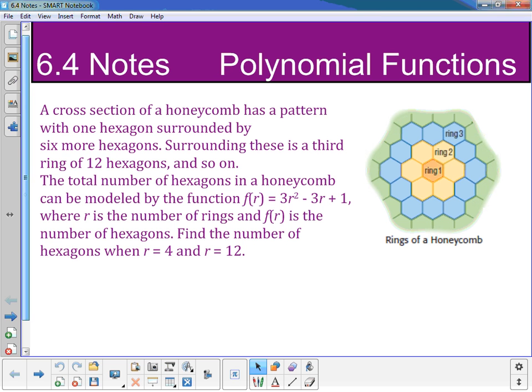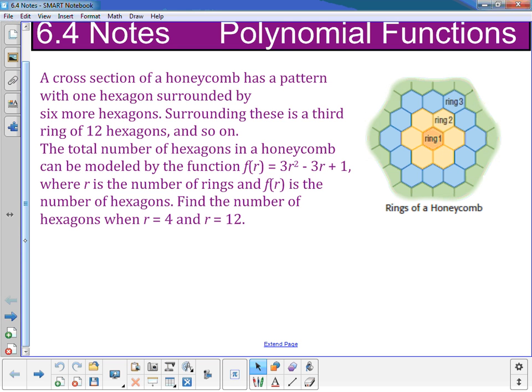So we know the function of the pattern. We're looking at this pattern here. We start with a hexagon, then we go around the outside, then we go around the outside of that, and so on. And each one of these is a ring. So what we want to know is how many hexagons will we have if we're looking at four rings.